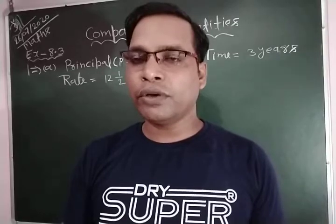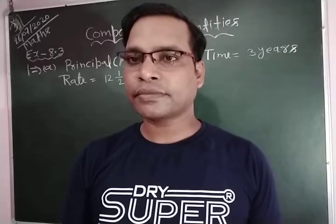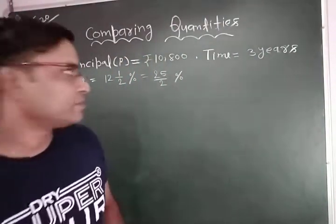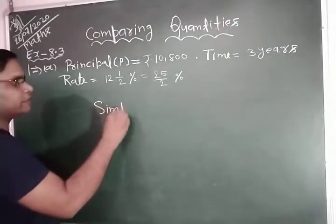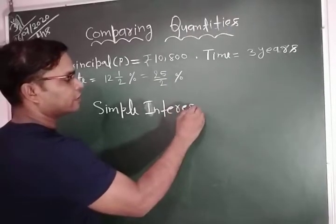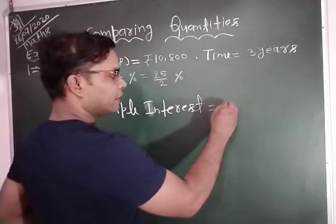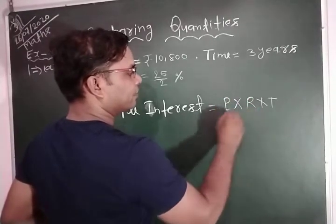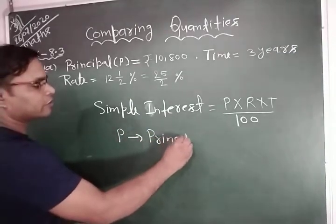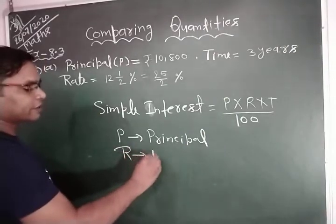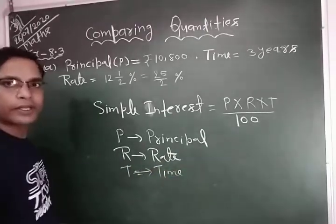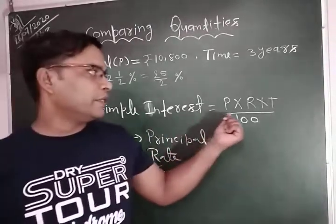In this exercise, we know how to find simple interest, compound interest, and amount. The formula of simple interest is: Simple Interest equals P into R into T by 100, where P means principal, R means rate, and T means time.